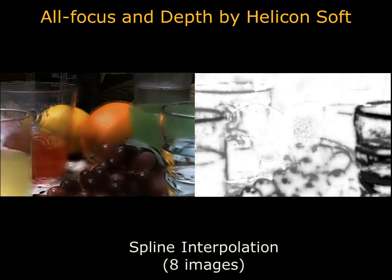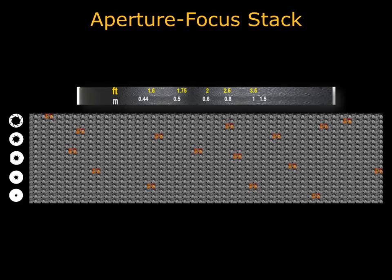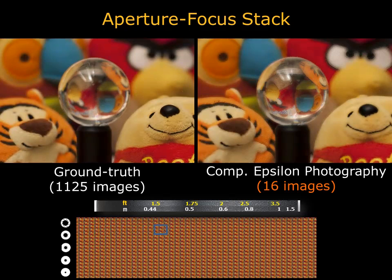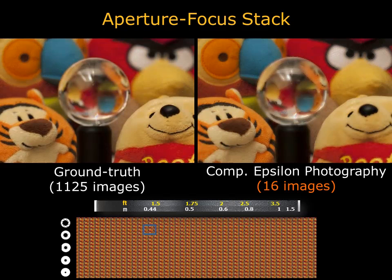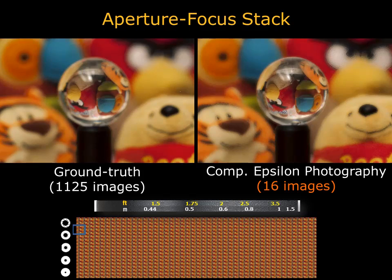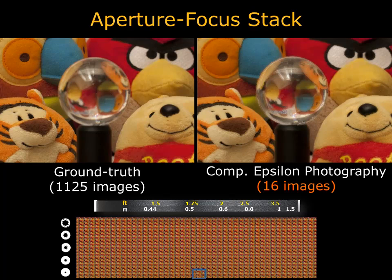Next, we explore varying both focus and aperture. Using only the 16 input images highlighted, we reconstruct the entire Epsilon photography stack as it varies with focus and aperture settings, corresponding to over 1,000 images. We now show subsets of the reconstructed space — first varying the focus at a fixed aperture, then varying the aperture at a fixed focus. Keep in mind that only 16 images of the scene were used. Note that bokeh and focus are faithfully reproduced.